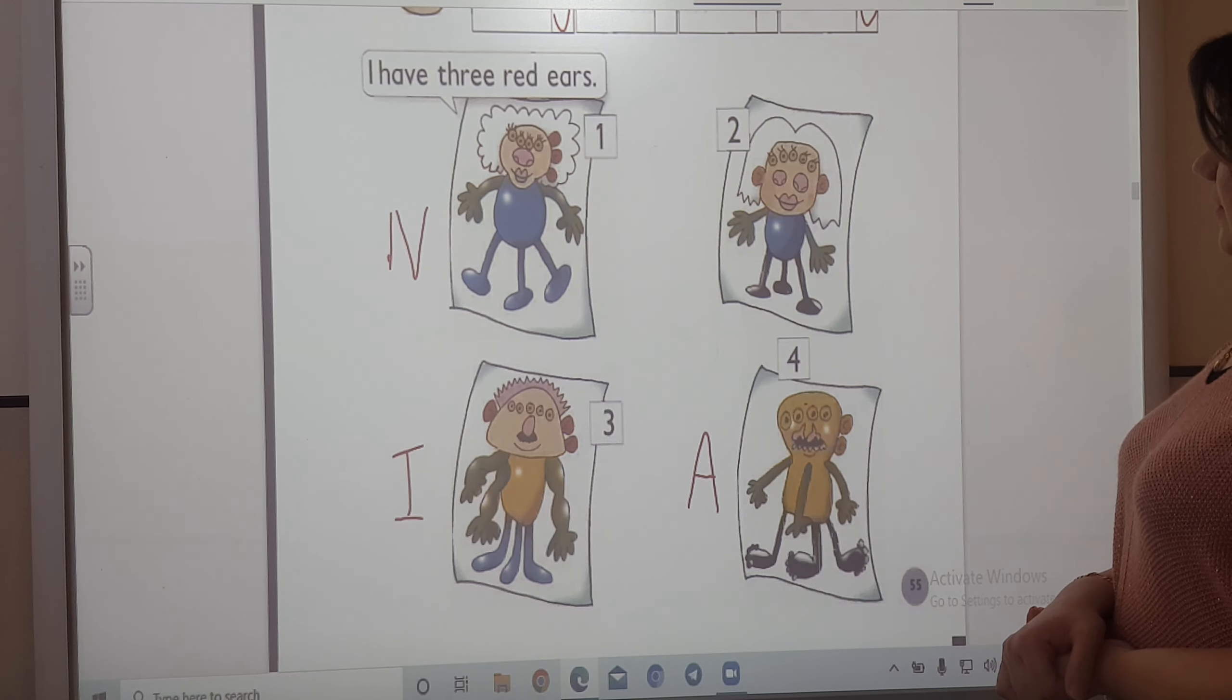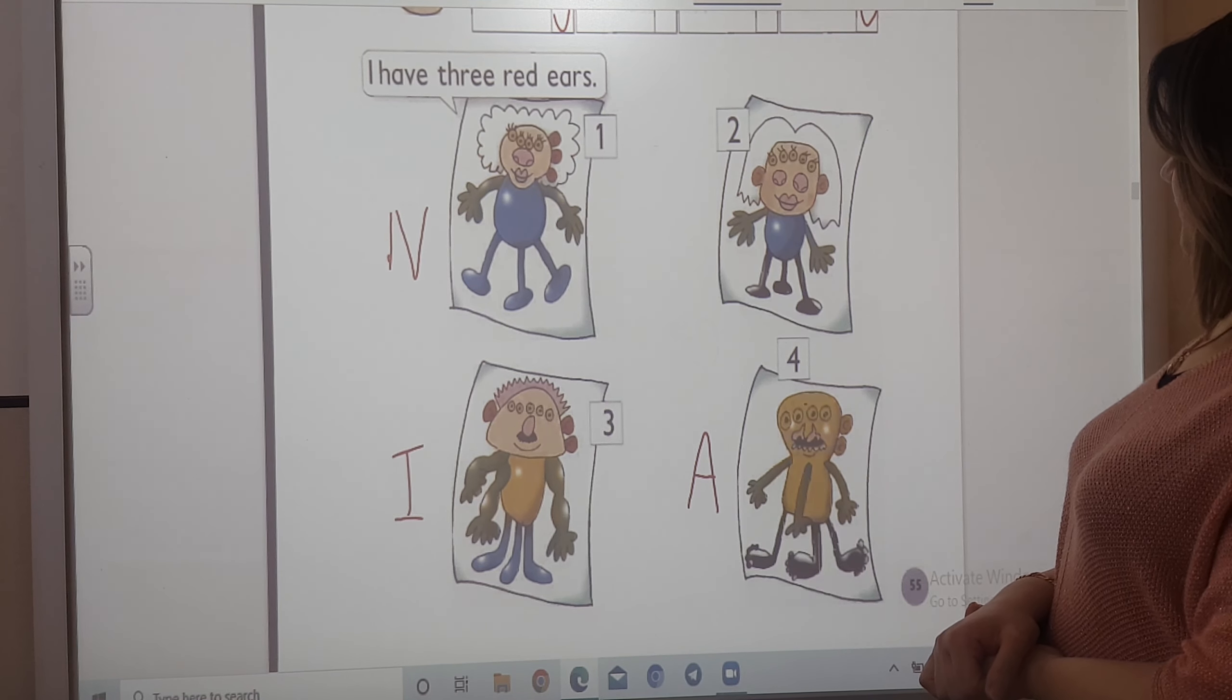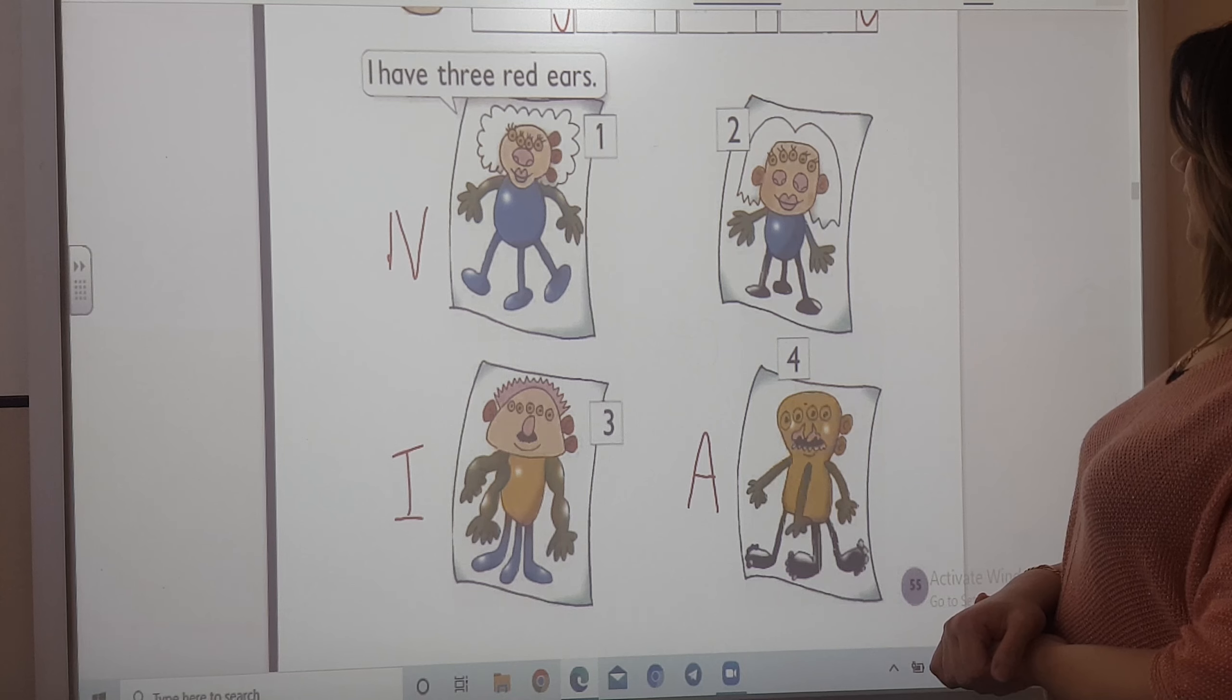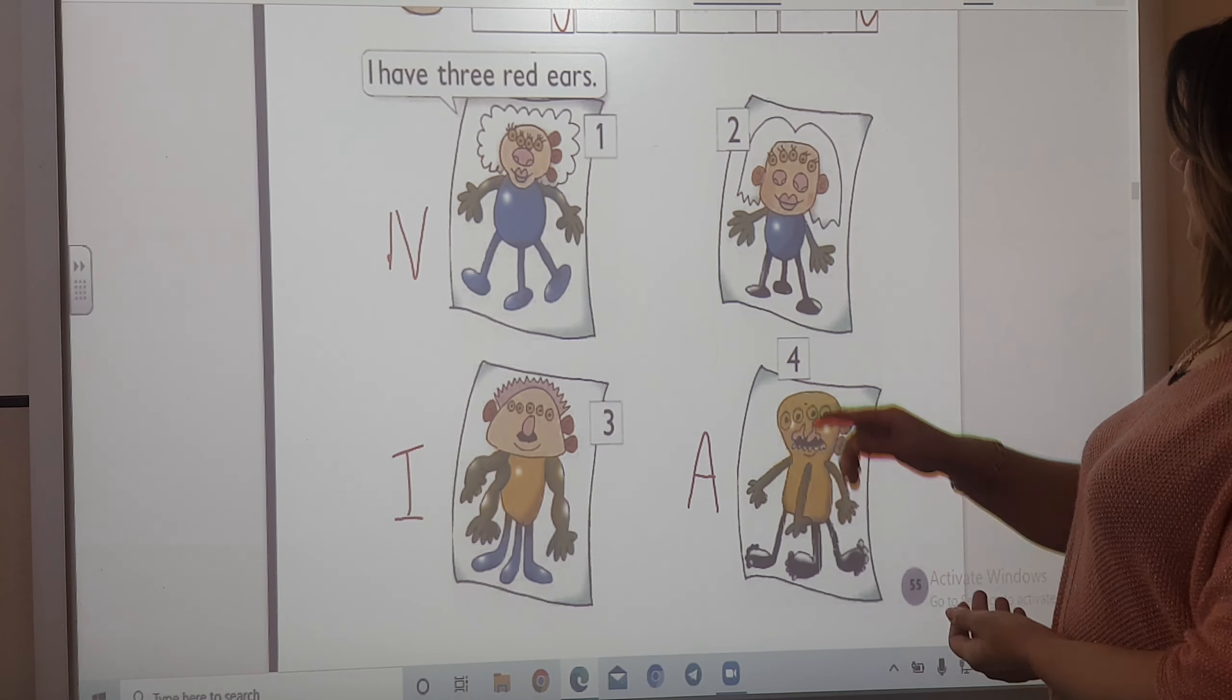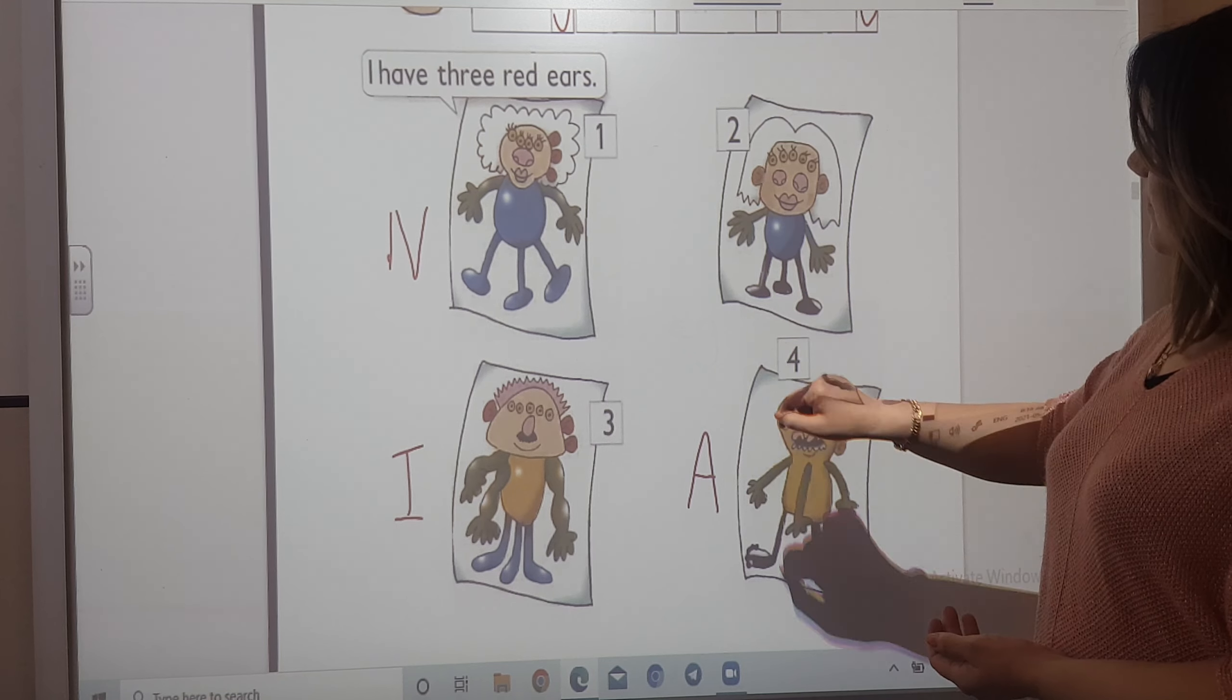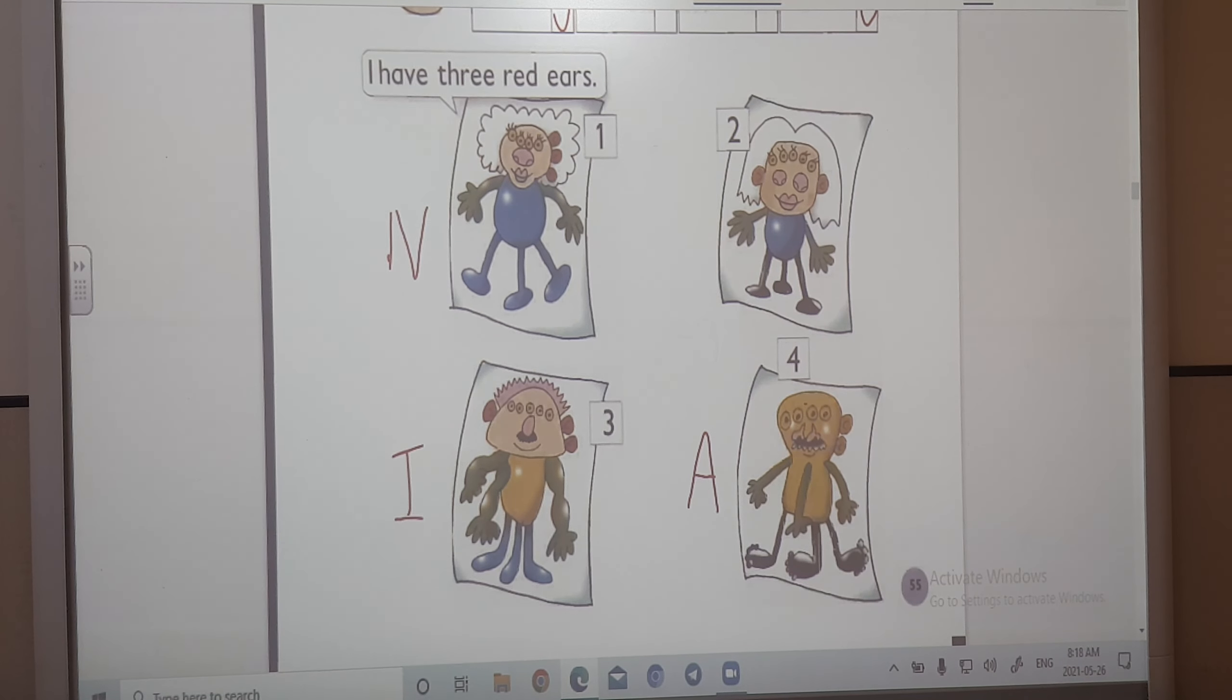My name's Hany. My monster has a blue body. She has two green arms and two green hands. She has white hair. She has three black legs. And she has two orange ears. Correct. This is for Hany.